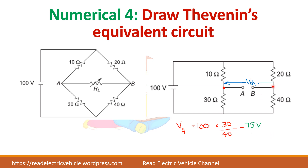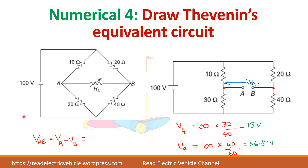Again, you have to find what is VB. To find VB, 100 volts is applied across this one also — 20 and 40 ohms. So 100 into 40 (the lower resistance) divided by total resistance 40 plus 20 equals 60. So you get VB equals 66.67 volts. What is VAB? This potential minus this potential — VA minus VB equals 75 minus 66.67 equals 8.33 volts. So VAB is the Thevenin voltage or open circuit voltage.